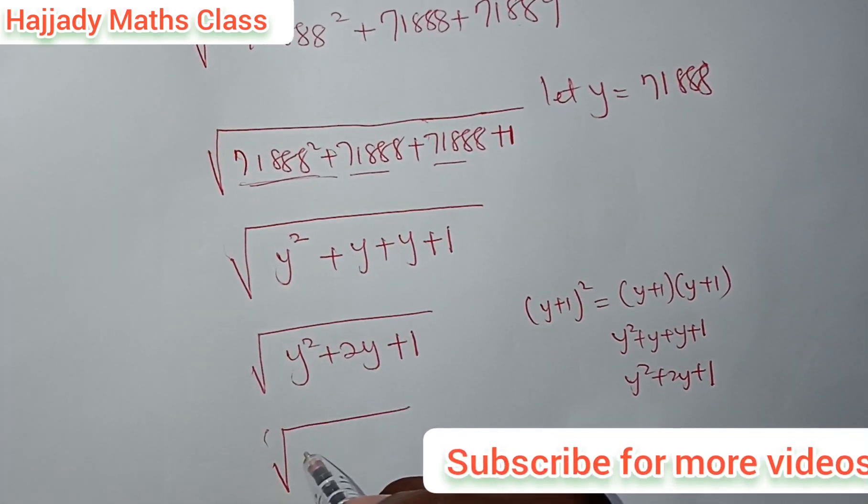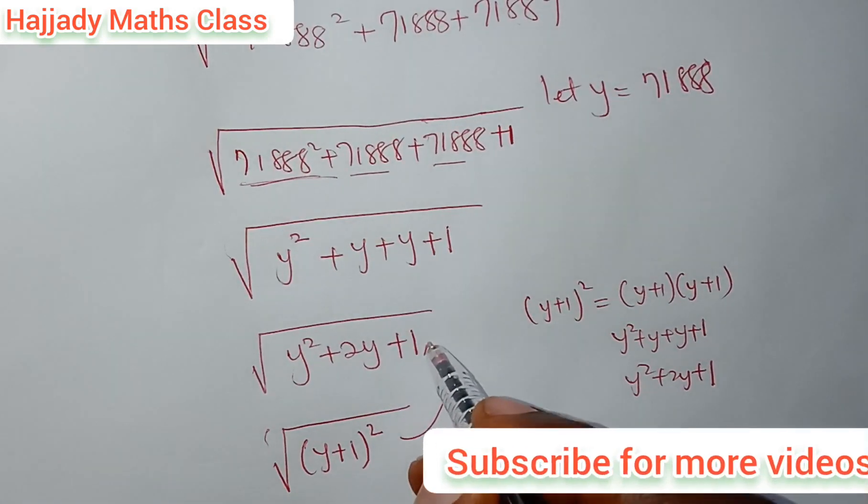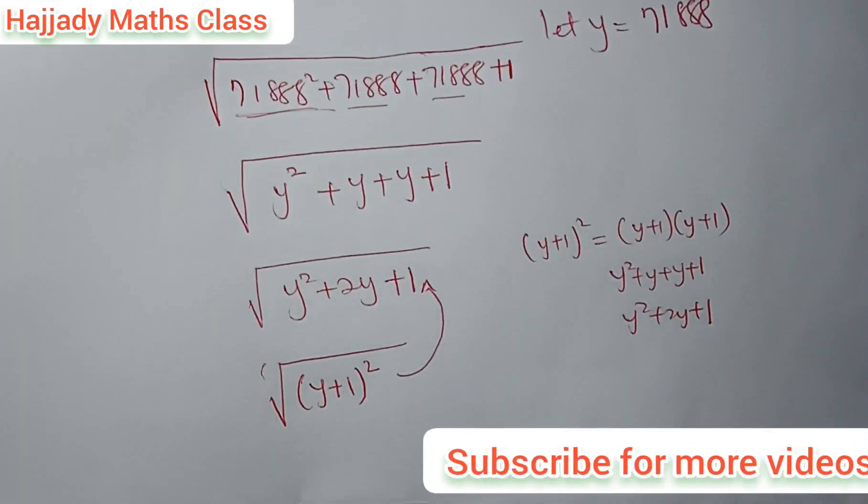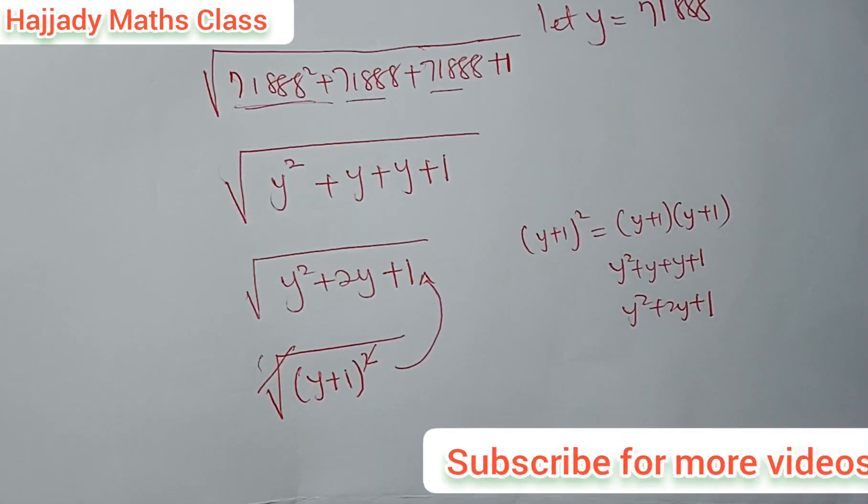That means this can be written as (y plus 1) squared. And by the law of indices, the square root can cancel this power of 2.